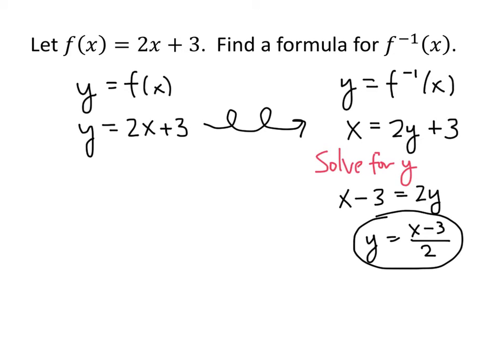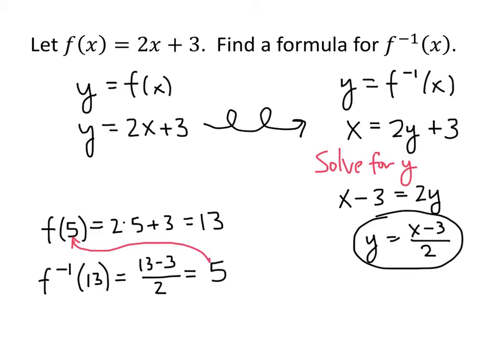We can see the relationship here. For example, what do we get when we plug 5 into our function f? f of 5 is going to be 2 times 5 plus 3. 2 times 5 is 10. 10 plus 3 is 13. Notice what happens when we plug 13 into our inverse function. Our inverse function says x minus 3 divided by 2. So we get 13 minus 3 divided by 2. That's 10 divided by 2. That works out to be 5. Notice that when we plugged 5 into our original function, we got 13. And when we plugged 13 into our inverse function, we got 5. That's exactly the relationship that we're looking for when we talk about inverses.